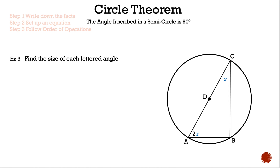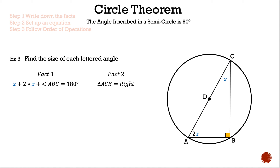Example three: find the size of each lettered angle. The image gives two measurements: x and 2x. Fact one: x + 2x + angle ABC = 180°, for triangle ABC. Fact two: triangle ACB is a right triangle, because the longest side is the diameter, making it the hypotenuse, so angle ABC = 90°.